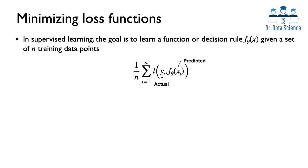So these y_i's are the true or actual responses, and what f of theta gives us is the predicted value. In the case of regression, for example, you can see that this loss function is simply subtracting predicted and actual values and taking this difference to the power of 2. And this is not the only way to define a loss function, which is why it's really important to learn how to define your own custom loss functions in PyTorch or other data science and deep learning frameworks.